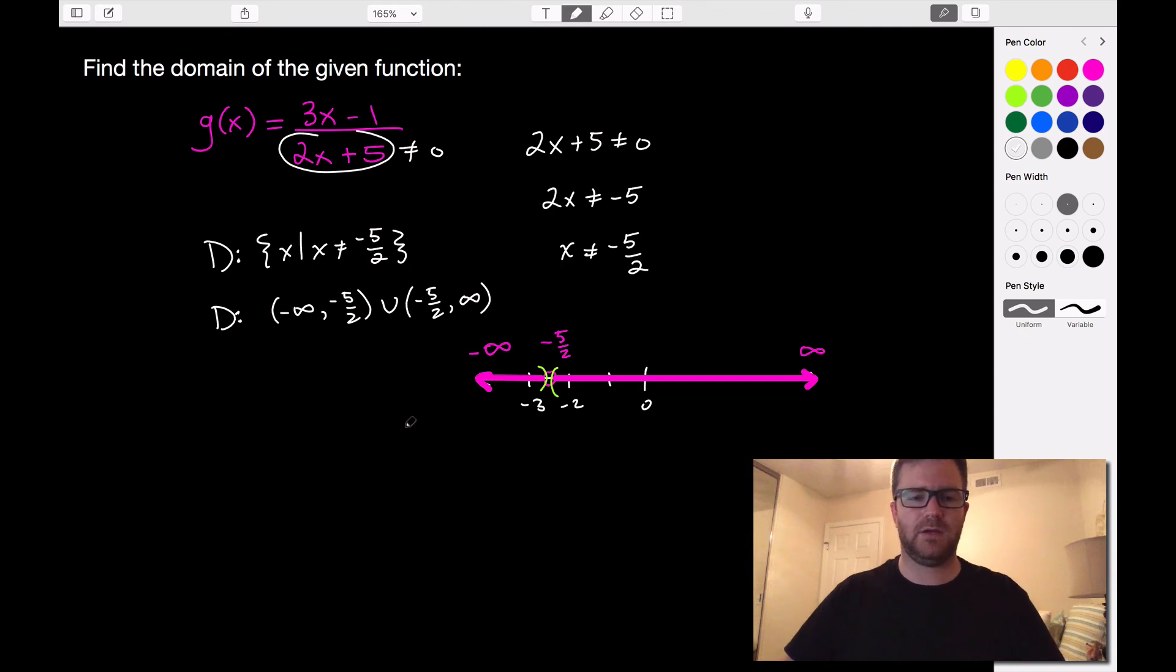Again, parentheses on both because they're not included in our solution set. So key thing for this, remember rational equations, the denominator can't be zero. We're not allowed to divide by zero.